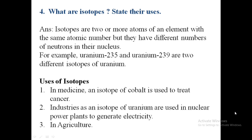Uses of isotopes: in medicine, an isotope of cobalt is used to treat cancer. In industries, isotopes of uranium are used in nuclear power plants to generate electricity. Also, isotopes can be used in agriculture.